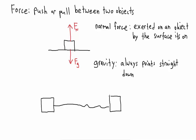Another type of force is called a tension force. This is really just a force that's exerted by a string or some object. Say you have a block attached to a tight string — the force that the string is exerting on the block, we call that tension. You can see here two blocks connected by a string, and the string pulls on the first block and the second block with some tension force. They're not necessarily the same tension on each side — in some cases they are, but not always.